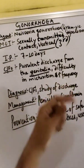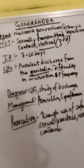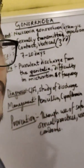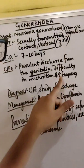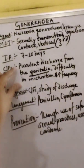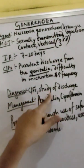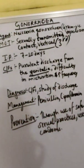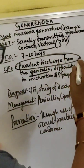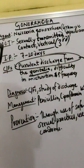The urination frequency increases, similar to polyuria as seen in diabetes. For diagnosis, the clinical features and the purulent discharge that occurs in gonorrhea will be studied.